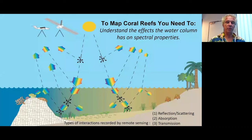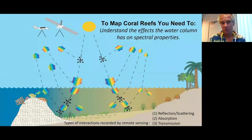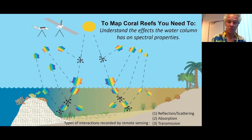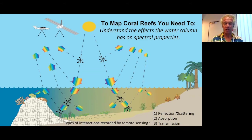Before we can map a reef environment using remote sensing, we need to understand the challenges it faces. Imagine a camera looking at the Earth's surface, collecting reflected sunlight. As it passes through the atmosphere, the signal gets changed. Through the water column, it gets changed as well. In clear waters you can see deeper than in turbid water, and that's a challenge when mapping in the coastal zone because there's a lot of variation.